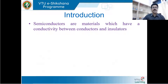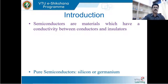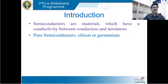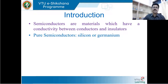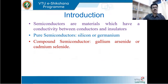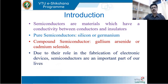Semiconductors are the materials which have conductivity between conductors and insulators. There are various kinds of semiconductors. The very pure semiconductor materials are silicon and germanium. Silicon has a small energy gap of 1.1 electron volts, and germanium has an energy gap of just 0.67 electron volts. Other than those, there are compound semiconductors such as gallium arsenide or cadmium selenide, with energy gaps ranging from around 1.3 to 2.1 electron volts.